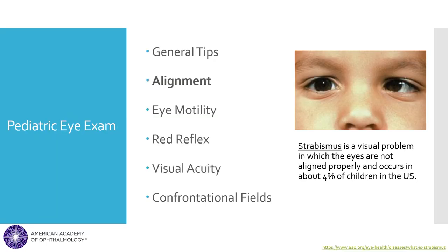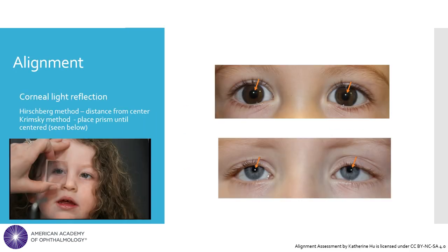An important part of the pediatric eye exam is assessment of alignment. Misalignment, referred to as strabismus, is a common pediatric ophthalmic problem. It is important to identify these patients because, if not corrected, poor ocular alignment in a developing child can lead to irreversible vision loss. Alignment can be assessed using the corneal light reflex, or the reflection of light from off of a child's cornea from a light source such as a pen light, from roughly one to two feet aimed at the patient's midline.